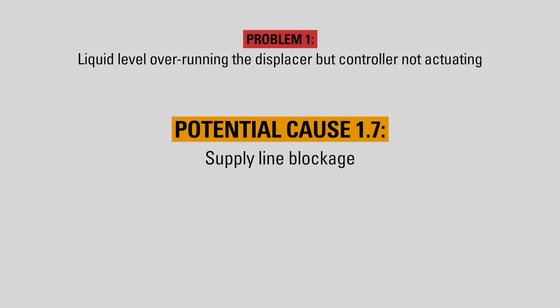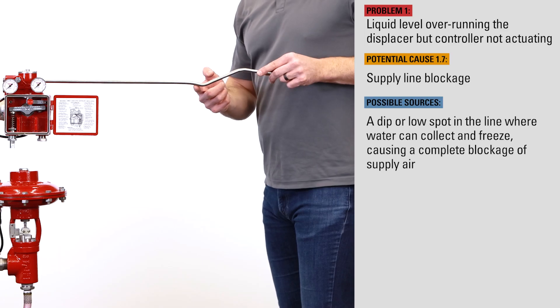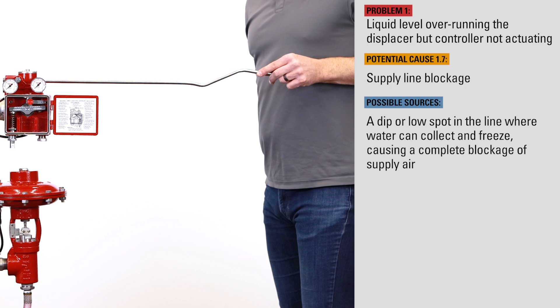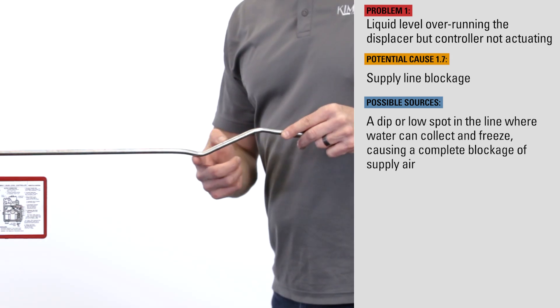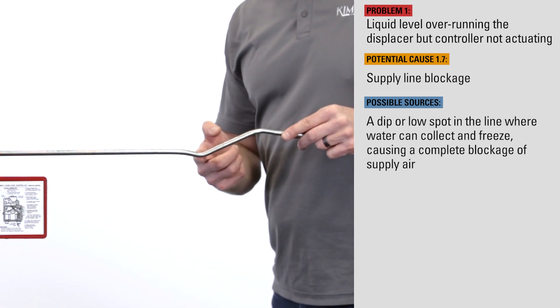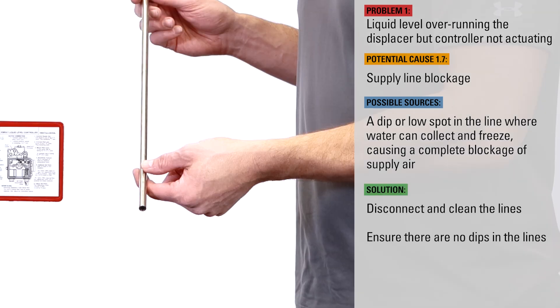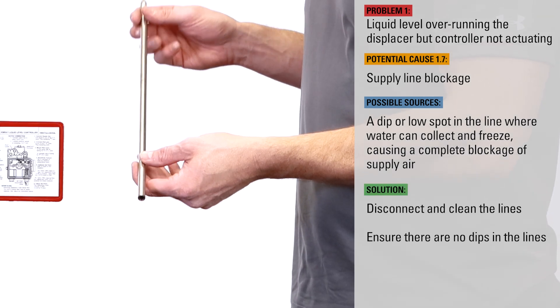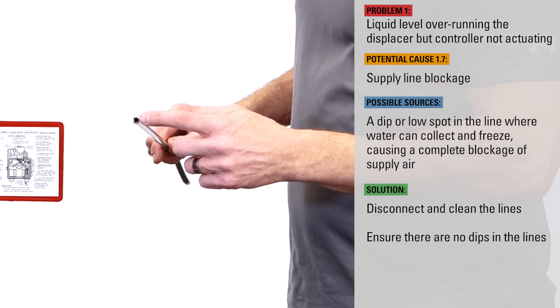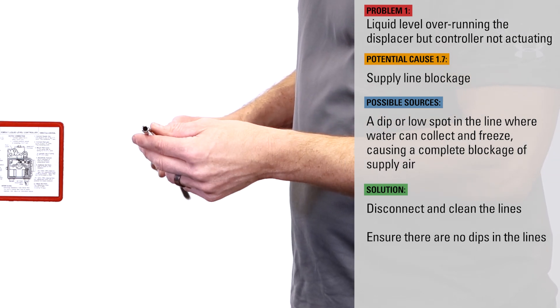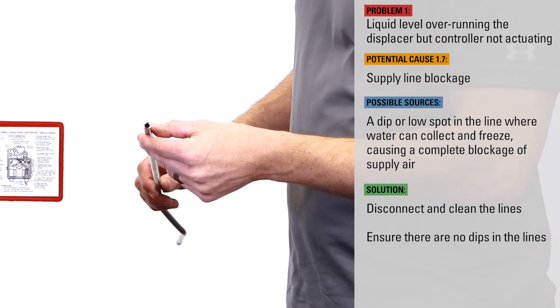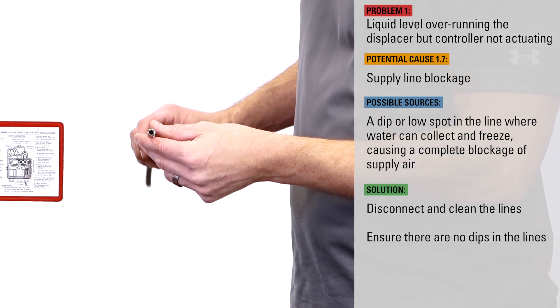Similarly, the supply line could be blocked due to moisture buildup. If there's a dip or low spot in the line, water can collect and freeze, causing a complete blockage of supply air. Disconnect the lines and clean them out. Ensure there are no dips in the lines where moisture could collect and pool.